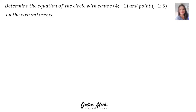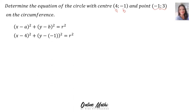Determine the equation of the circle with center (4, -1) and point (-1, 3) on the circumference. In the previous example the radius was given with the center, but now only a point is given — there is no radius. We will have to calculate the value for the radius. Starting with the center coordinates, a's value is 4 and b's value is negative 1, giving us the equation with a bracket: x minus 4 squared plus y plus 1 squared equals r squared. We don't know r yet.